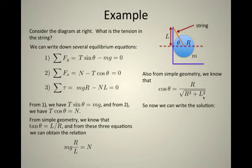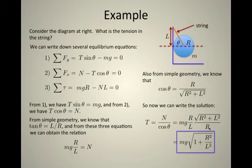And now we can write out a solution. The tension of the string has to equal the normal force over cos θ, or it equals mg times the ratio R over L times the square root of R² over L² over R. So let's simplify just a little bit. It equals mg times the square root of 1 plus the ratio square root of R² over L².